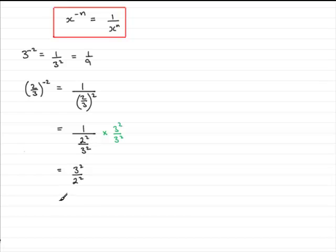Okay well we can simplify this. Because both of these are to the power 2 we can write this as 3 over 2 to the power 2.